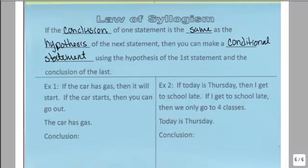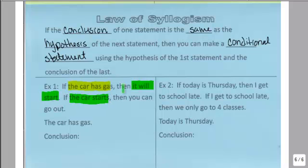So that sounds really complicated, but it's not. It just says if the car has gas, then it will start. But you see that the next one says the car starts. So those are essentially the same thing. And the last one says, then you can go out. So all I'm going to do is remove the green stuff and attach the yellow and blue together.